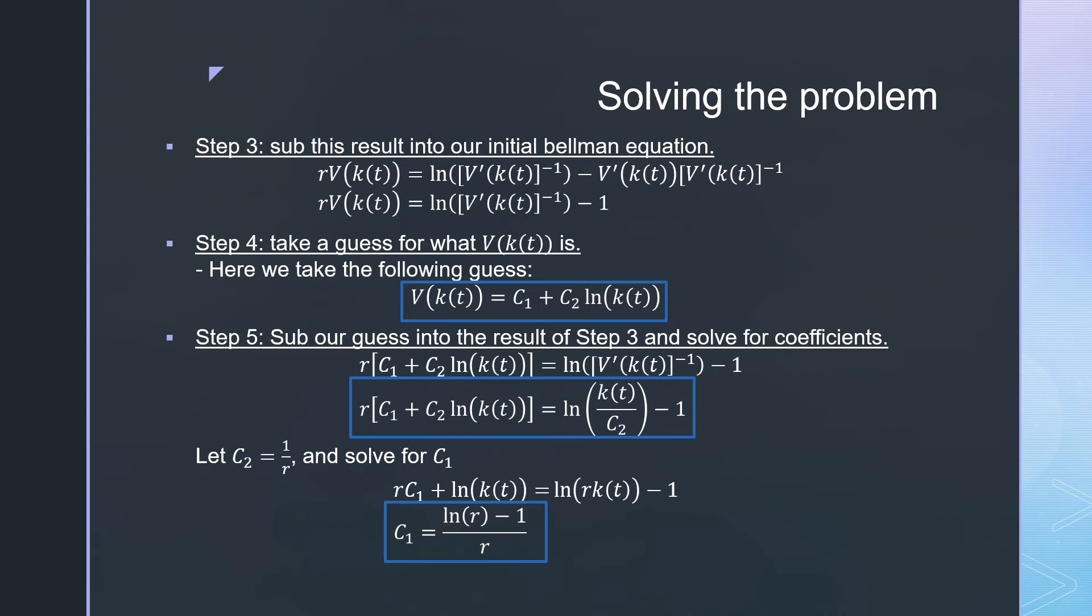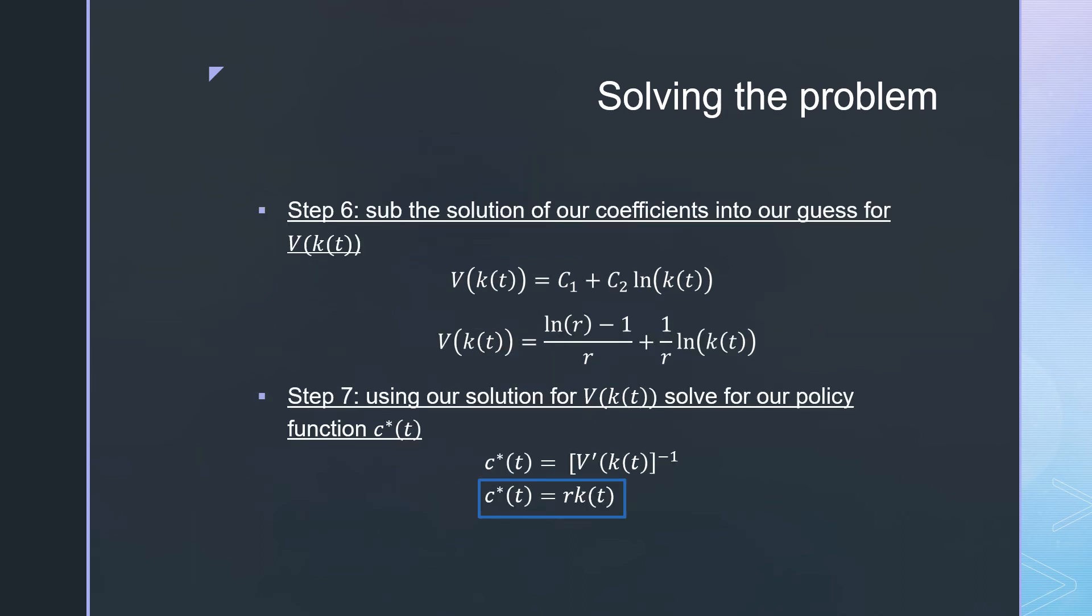We solve for our coefficients here. The way we do this is by making this as simple as possible. We make our algebra simple by letting c2 be one value. We're allowed to do this because these are undetermined coefficients that could be anything we want, and we're taking the liberty to pick it as 1/r. With that in mind, we're now able to solve for c1 here.